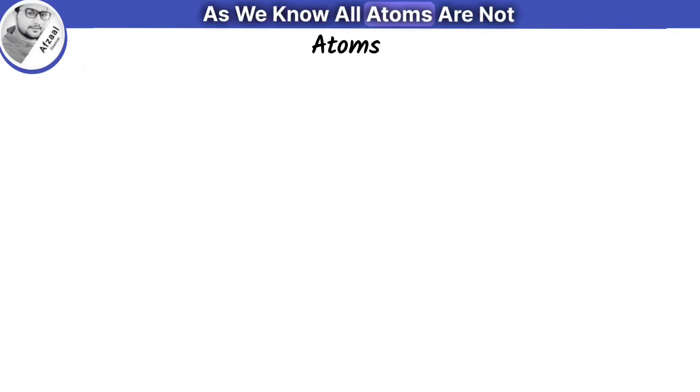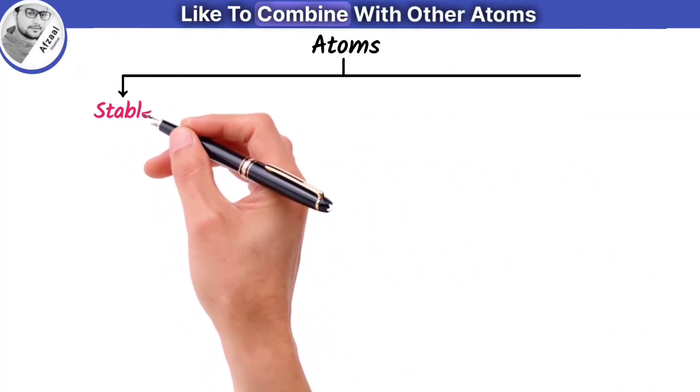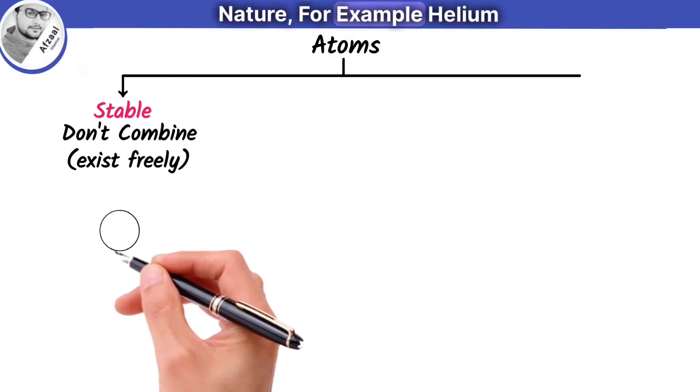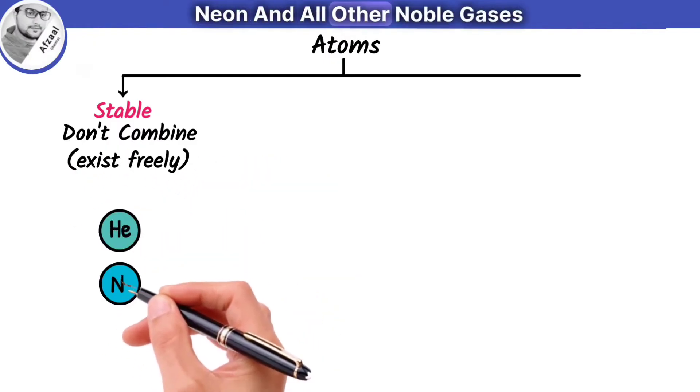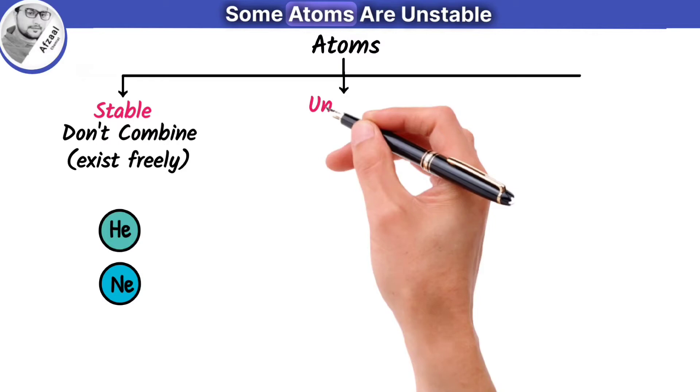Now we are going to learn about elements, compounds, and molecules. As we know, all atoms are not identical. Some atoms are stable and don't like to combine with other atoms. Such atoms exist freely in nature, for example helium, neon, and all other noble gases. On the other hand, some atoms are unstable.